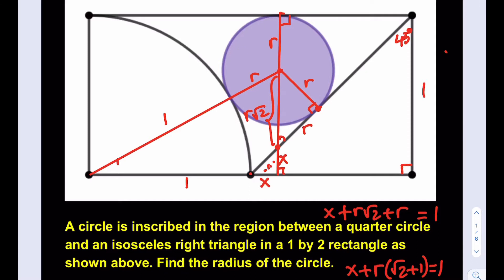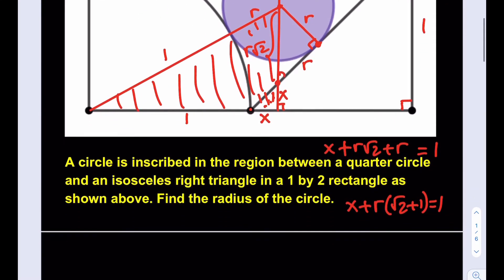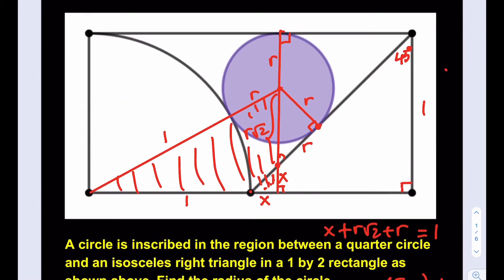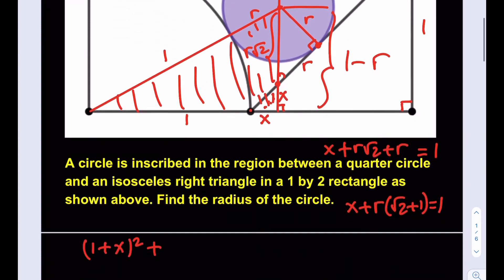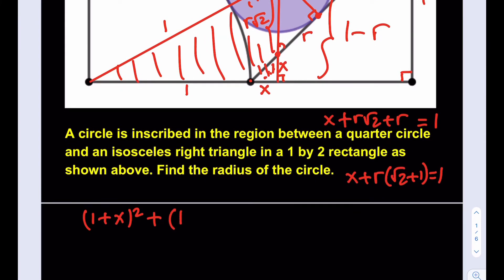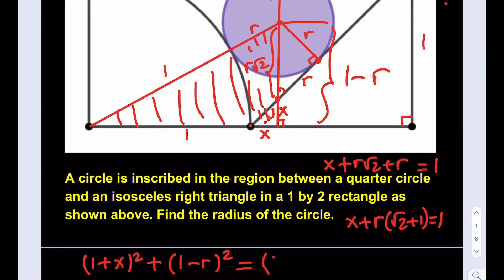We have a really nice right triangle to use with the Pythagorean theorem. The base is 1 plus x, squared, plus the height — the whole side is 1 and this piece is r, so the height is 1 minus r — squared. The hypotenuse is 1 plus r, so that's 1 plus r, squared.